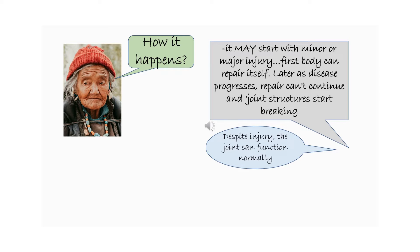How is OA diagnosed? For patients who are below the age of 45, there has to be some history of major trauma or injury. Above the age of 45, if there is activity-related joint pain and the person has either no morning stiffness or morning stiffness in the joints that is less than 30 minutes, they are likely having OA.